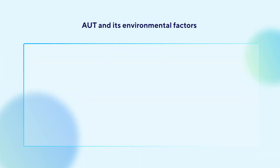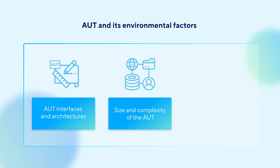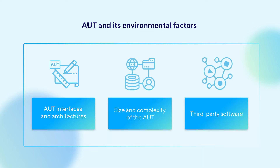Now let's go into details about the application under test and its environmental factors. When evaluating the context of the application under test and its environment, factors that influence test automation may consist of the interface, architecture, size, and complexity of the application under test, as well as third-party software.